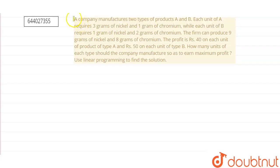The question is: a company manufactured two types of product, product A and product B. Each unit of A requires 3 grams of nickel and 1 gram of chromium, while each unit of B requires 1 gram of nickel and 2 grams of chromium.